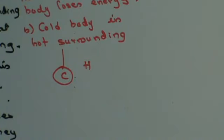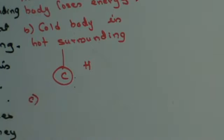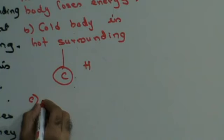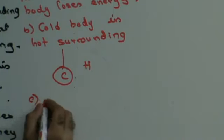The body continuously radiates heat to the surrounding. At the same time it absorbs heat from the surrounding. But on account of its being at a lower temperature, the body radiates less energy per unit time and receives more energy per unit time from the surrounding. As a result, the temperature of the body rises, or the body gains energy.